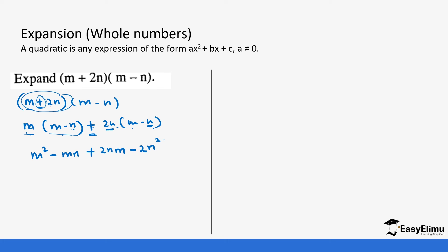Notice how we have done that. Now let's put the like terms together. We have m squared minus mn plus 2mn. The minus mn can be written as minus 1mn, so it is minus 1 plus 2, which gives plus 1. So the final answer is m squared plus mn minus 2n squared. That is one of the ways you can open that expression.